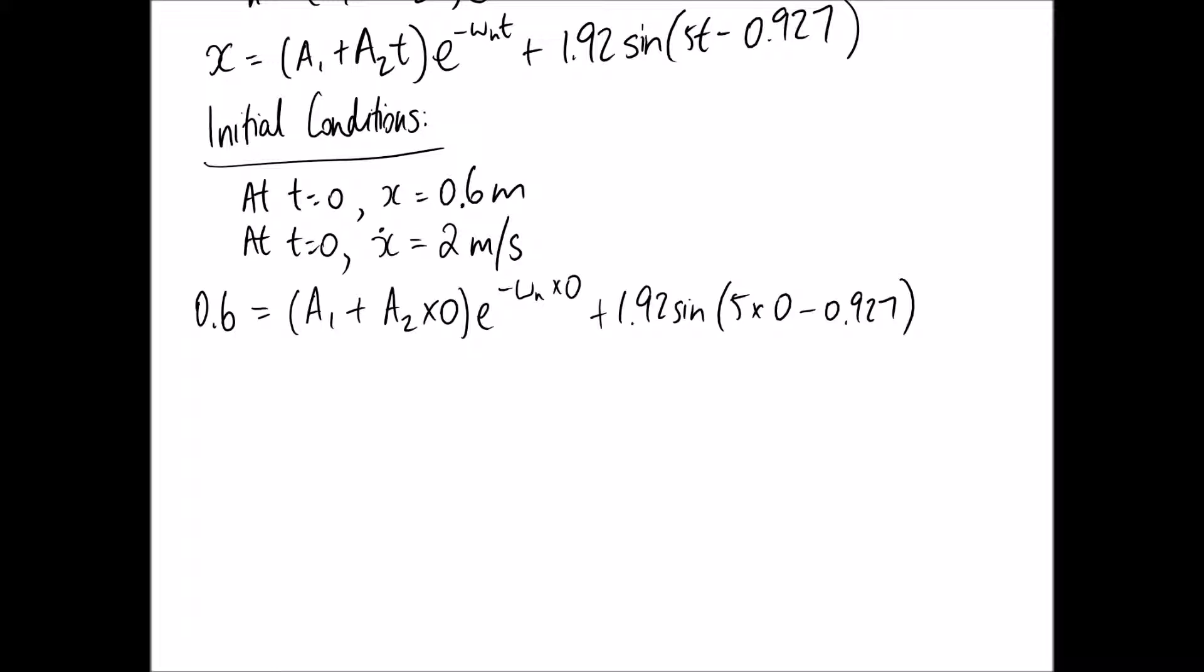So we can simplify this down a little bit. We're going to get 0.6 equals... that disappears, and we end up with e to the power of 0. And anything to the power of 0 is 1. So this is just going to simplify down to A1 multiplied by 1. Plus we have some number that this is going to simplify down to.